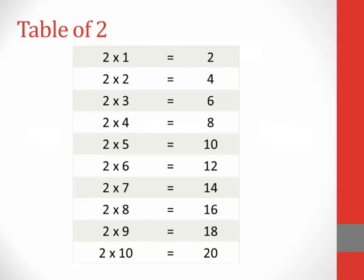Table of 2. 2 1s are 2, 2 2s are 4, 2 3s are 6, 2 4s are 8, 2 5s are 10, 2 6s are 12, 2 7s are 14, 2 8s are 16, 2 9s are 18, 2 10s are 20.